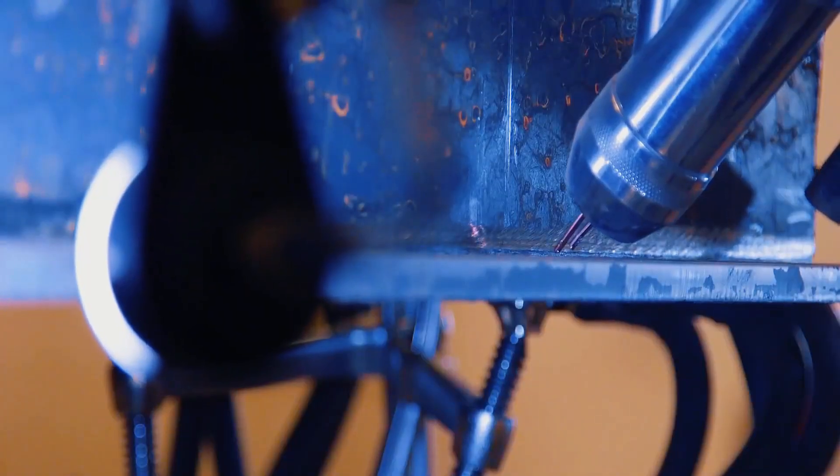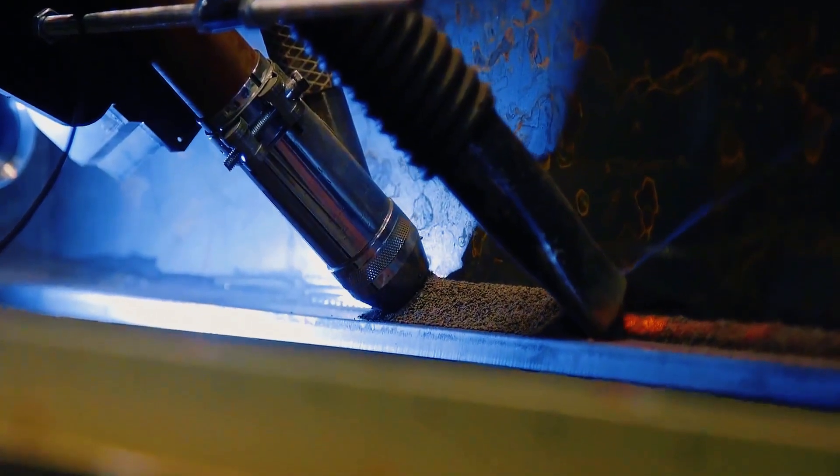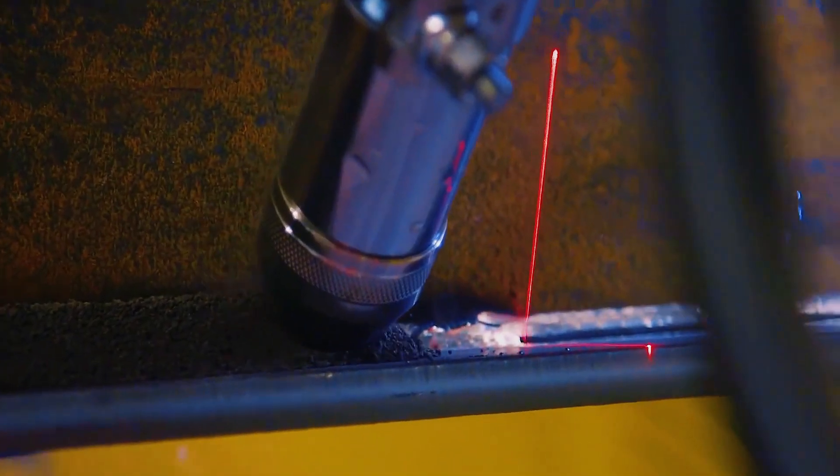In fact, when the conductive nozzle contacts the arc through the flux, it forms an electrical circuit and generates an extremely high-temperature arc, which melts both the flux and the arc.